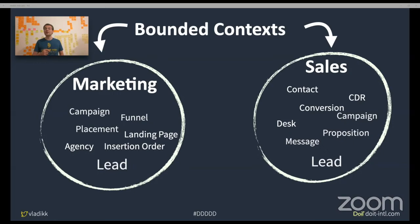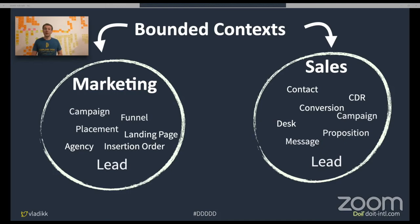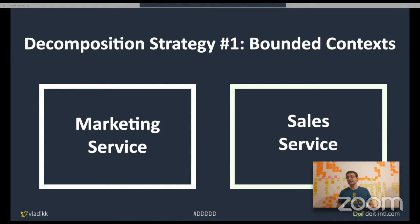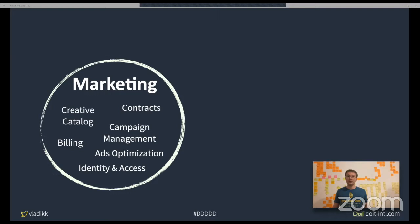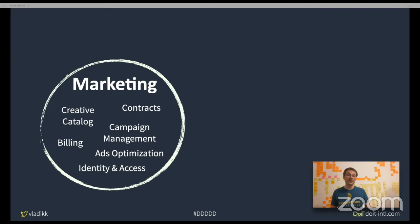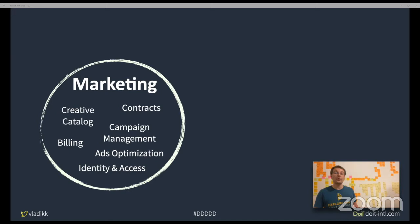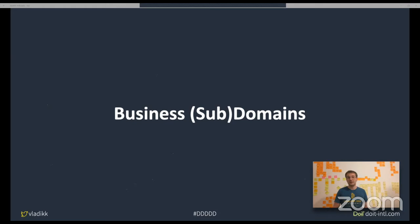In our case we had leads in two bounded contexts: Marketing and Sales. Each bounded context defines one and only one model of the lead that is correct within its boundaries. When we started, we used these boundaries to decompose our initial monolith — each bounded context became a separate service: a Marketing service and a Sales service. That was our first strategy: aligning service boundaries with bounded contexts.